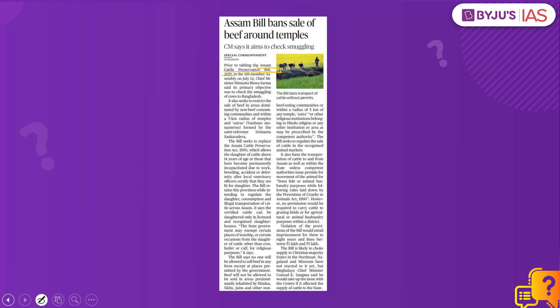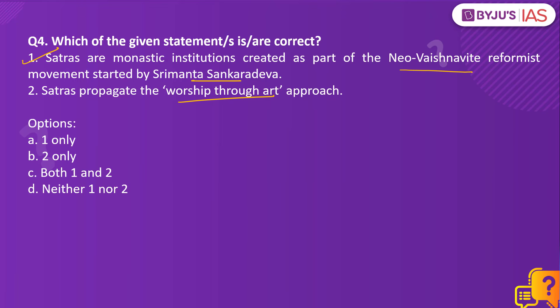The first statement is correct because satras are institutional centres associated with the Ekasarana tradition of Vaishnavism. These were created as a part of the Neo-Vishnavite reformist movement in Assam, and it is a unique feature of Vaishnavism in Assam founded by Sankaradeva. These satras were established as centres of religious, social and cultural reforms. Each satra had a Namgarh — a worship hall — as its nucleus, headed by Satradhikar. These monastic centres propagated Sankaradeva's unique approach of worshipping through art, which included music (Borgit), dance, and theatre. Therefore Statement 2 is also correct, and the right answer is Option C, both 1 and 2.